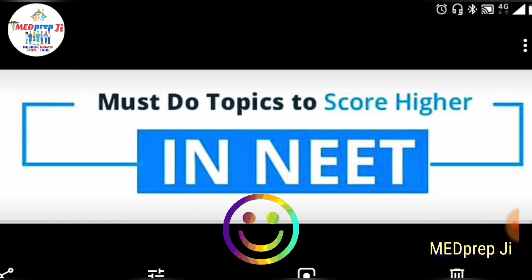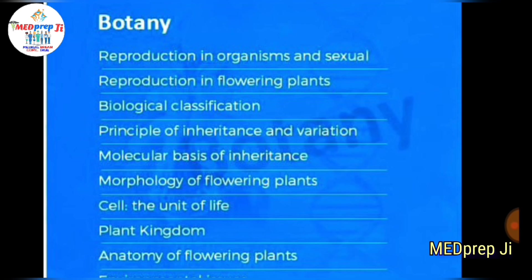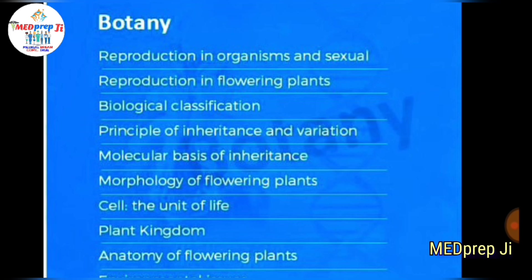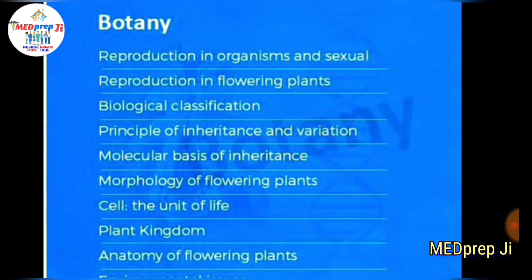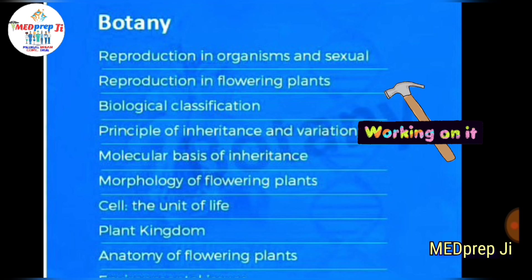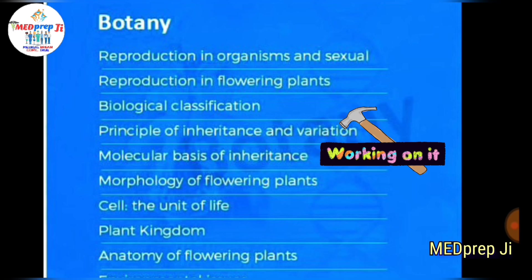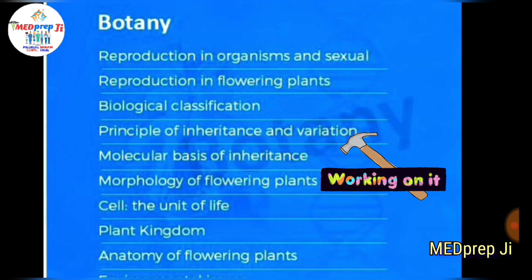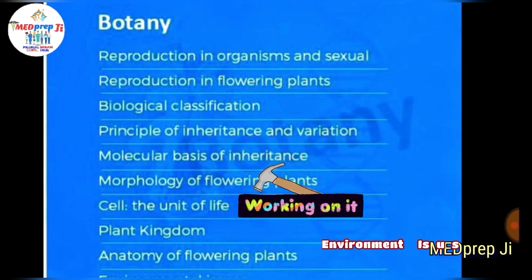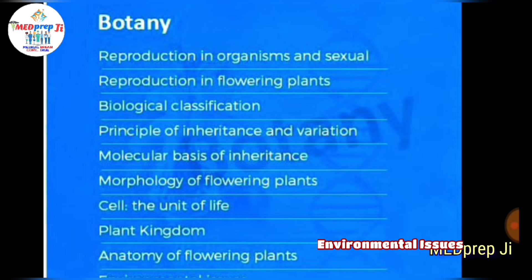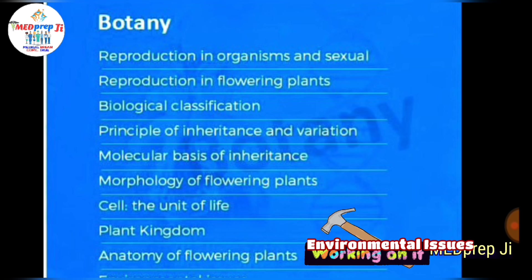Let's start this video with Biology. In Biology we have Botany: rank first goes to Reproduction in Organisms and Sexual Reproduction; rank second goes to Reproduction in Flowering Plants; rank third goes to Biological Classification, which is very important; rank fourth goes to Principles of Inheritance and Variation; rank fifth goes to Molecular Basis of Inheritance; rank sixth goes to Morphology of Flowering Plants; rank seven goes to Cell: The Unit of Life; rank eight goes to Plant Kingdom; rank nine goes to Anatomy of Flowering Plants; and rank ten goes to Environmental Issues.